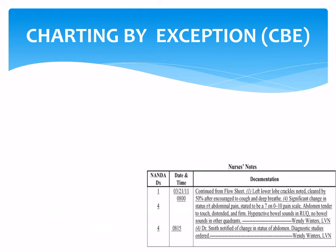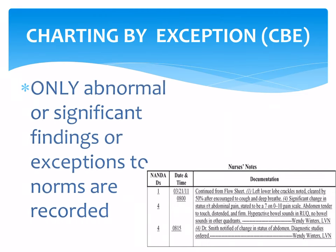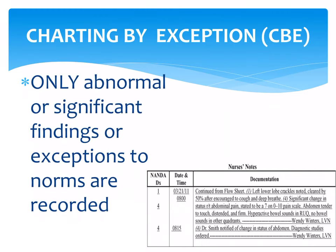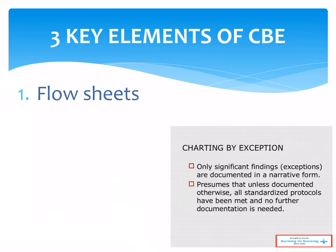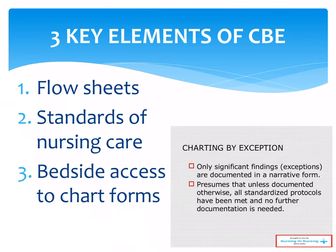Another documentation system is charting by exception, or CBE. Only abnormal or significant findings — exceptions to norms — are recorded. The three key elements of CBE are: flow sheets, standards of nursing care, and bedside access to chart forms.